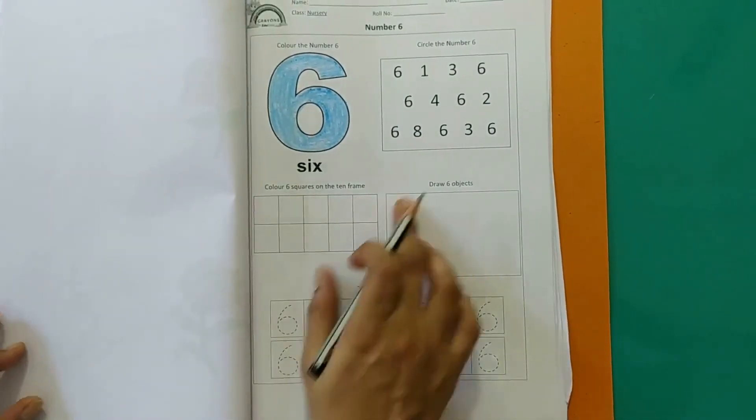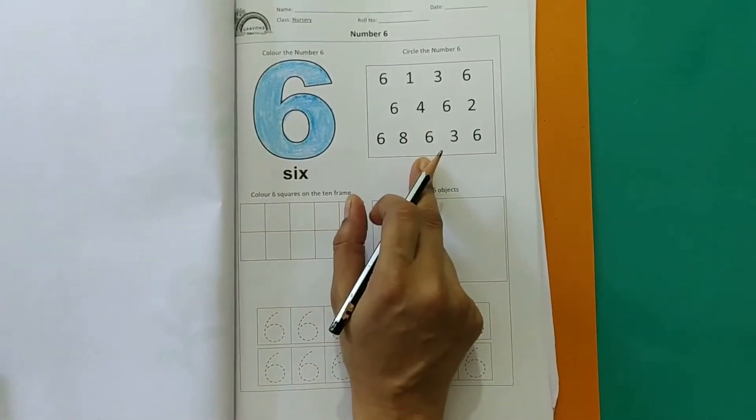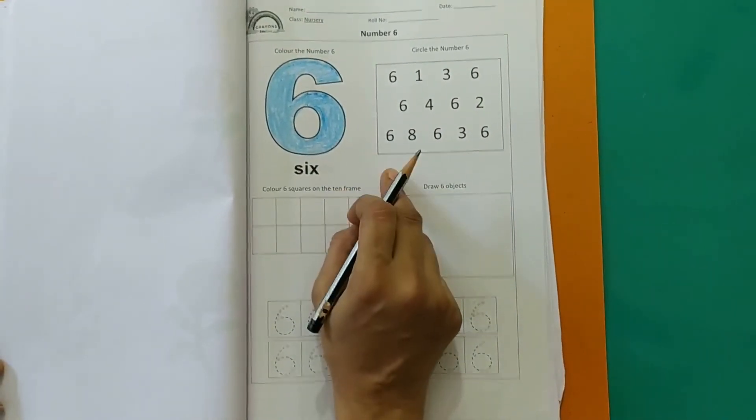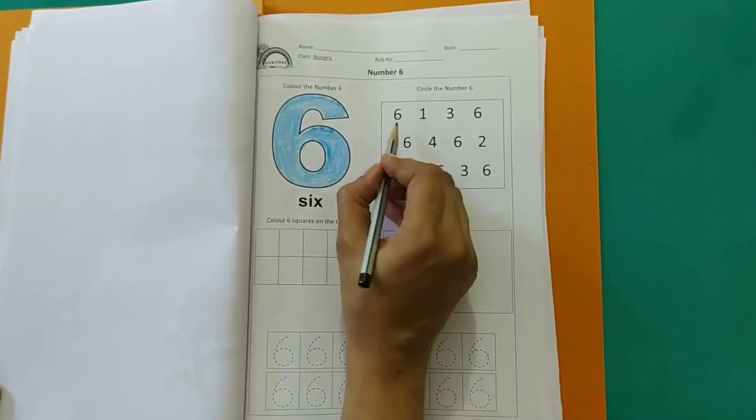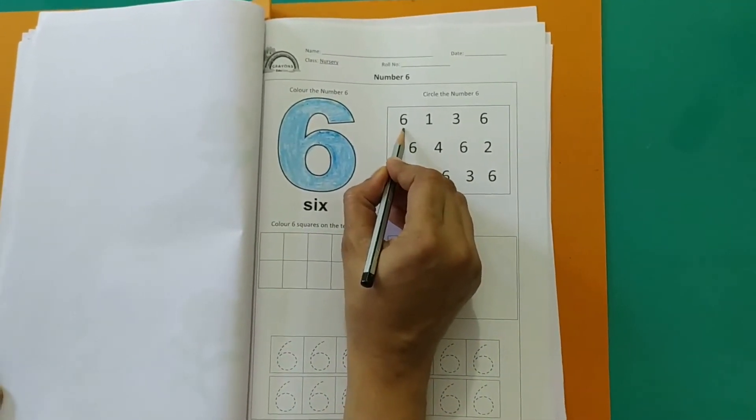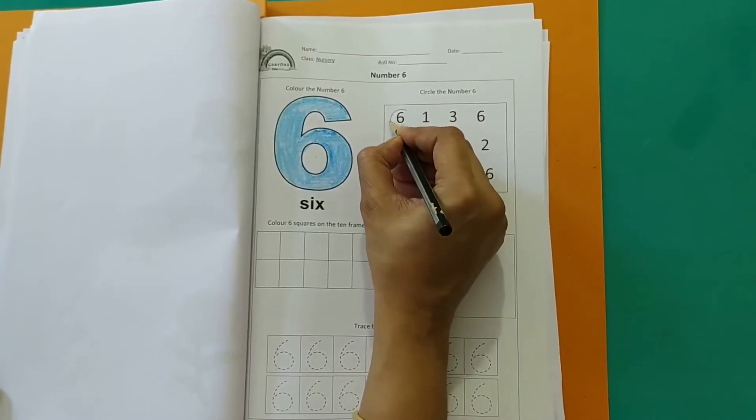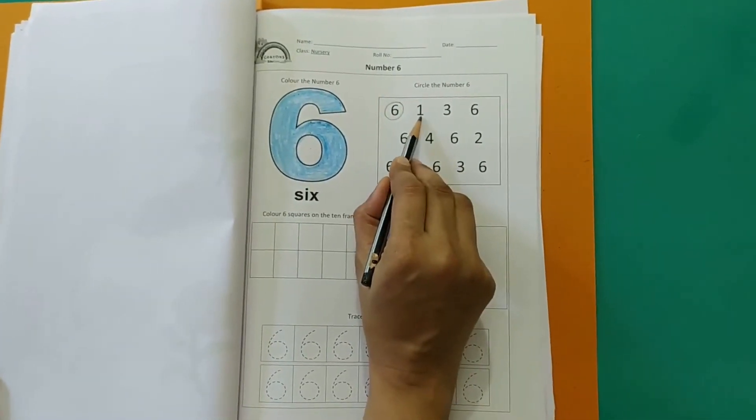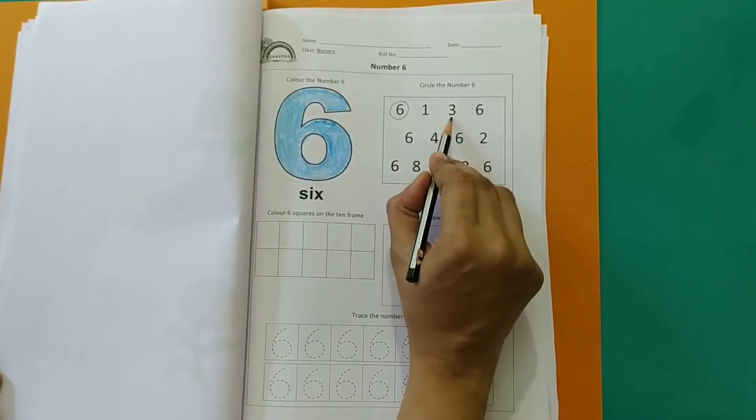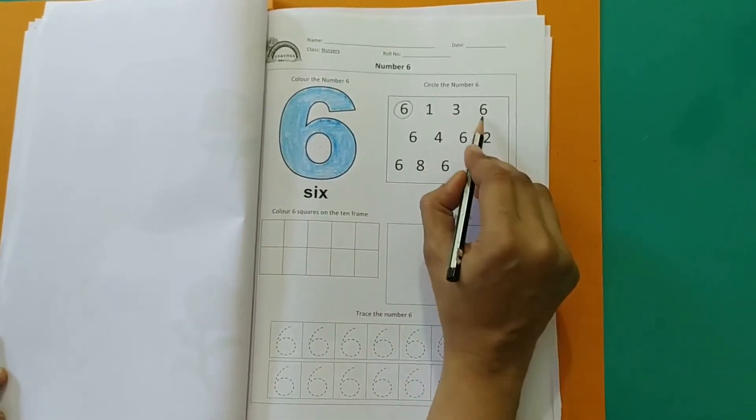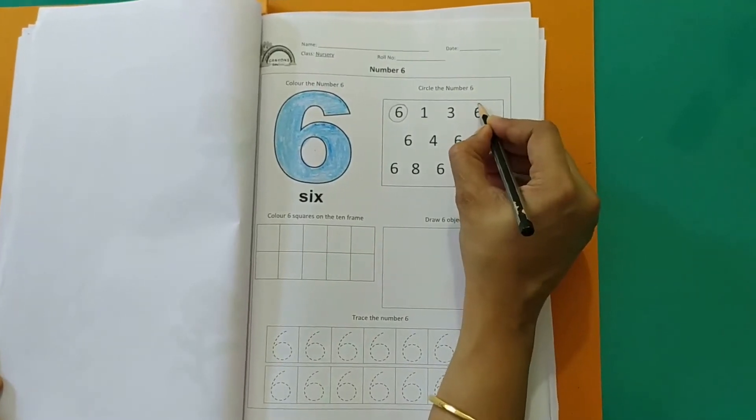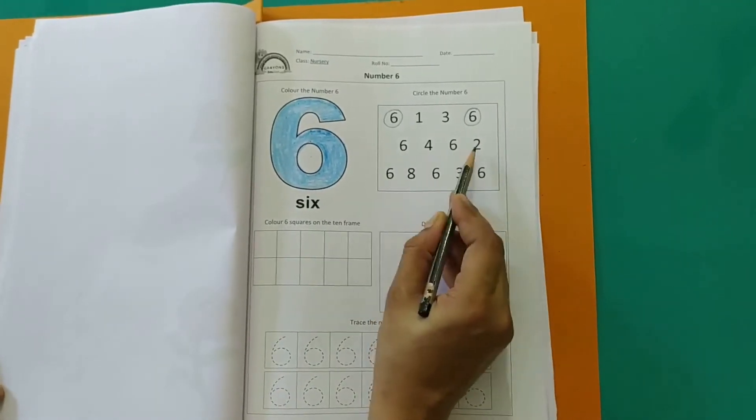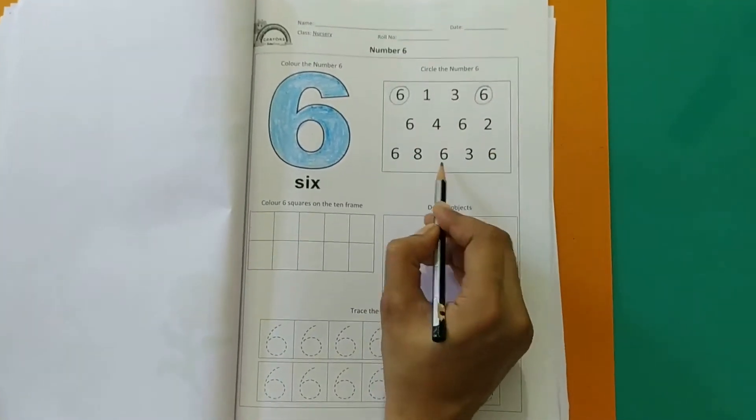Now what do we do next? Circle the number 6. We have so many numbers in this box, so we have to only circle the number 6. Now let's search. This is, is this number 6? Yes it is. So I will circle number 6. This is number 1, so I will not circle this. Number 3. This is again number 6. So we'll circle number 6. In the same way you have to search for number 6 in this box and circle them.